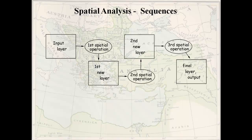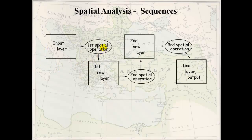A workflow can be thought of as a sequence where you start with an input layer, you do something to that input layer, it creates a new layer, you do something to it again and create another new layer. You go through sequentially from start to finish, ending up with a final layer that transforms the data in the input layer into information you can use in the output. That's a basic straight-through sequence.